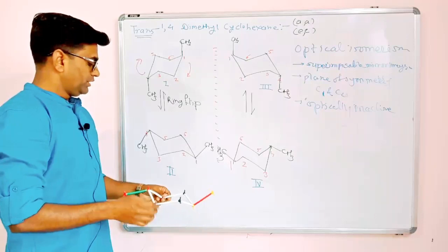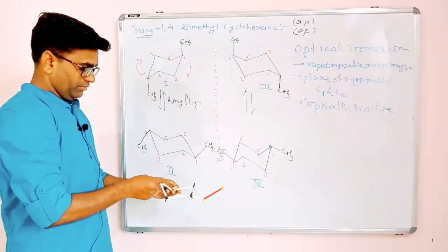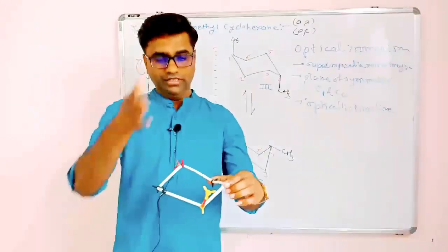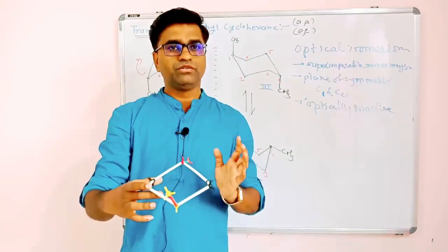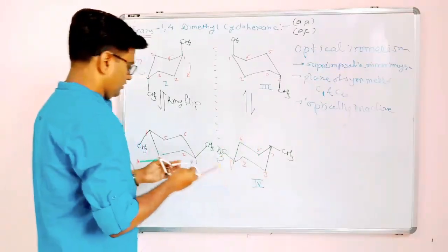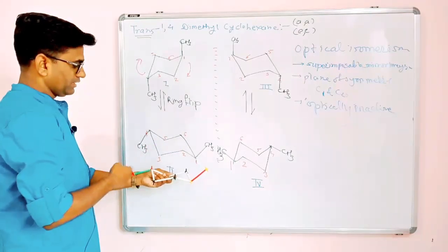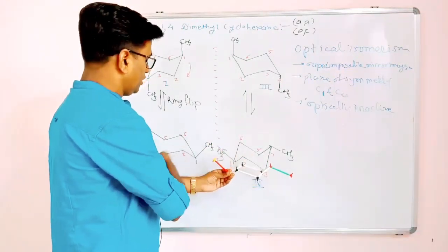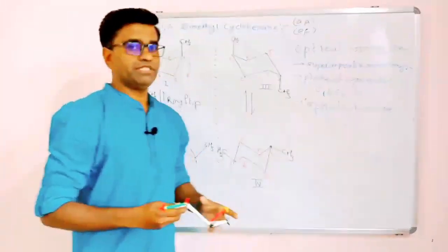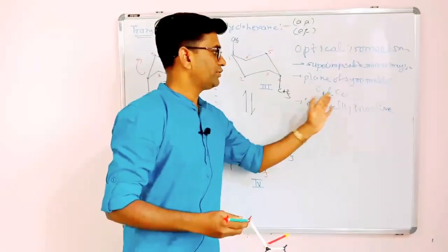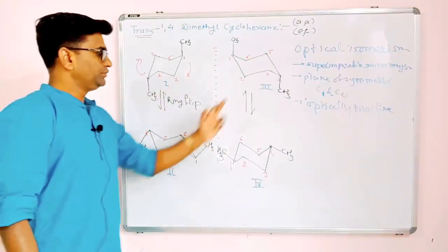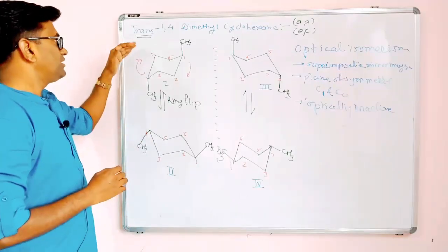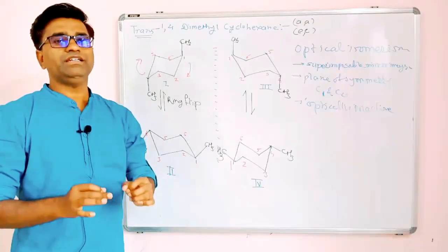Similarly, compound number 2 with equatorial methyls at carbon 1 and carbon 4 also possesses a plane of symmetry passing through carbon 1 and carbon 4. Rotating compound 4 shows it is identical to compound 2 — these are superimposable mirror images. Therefore, compounds 1, 2, 3, and 4 are all optically inactive. We can conclude that both cis and trans-1,4-dimethylcyclohexane are optically inactive compounds.